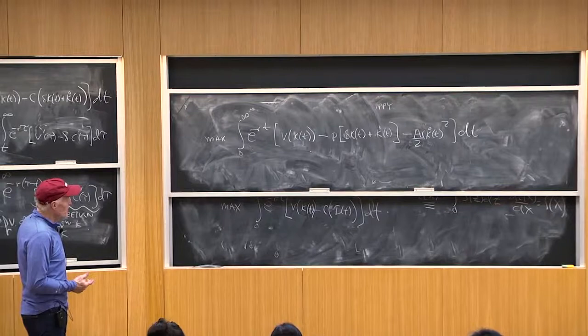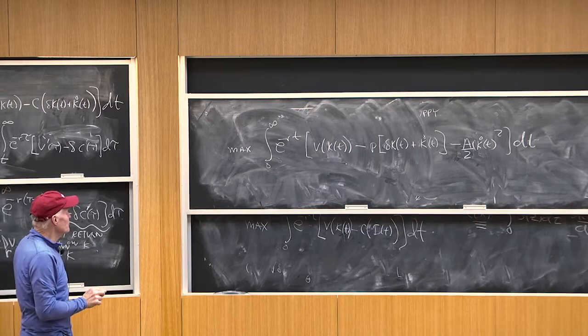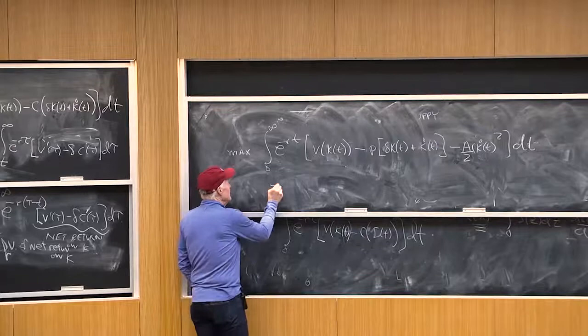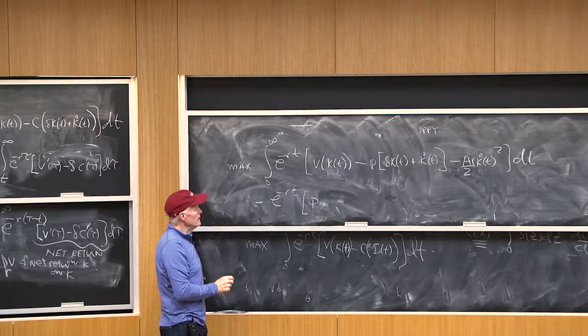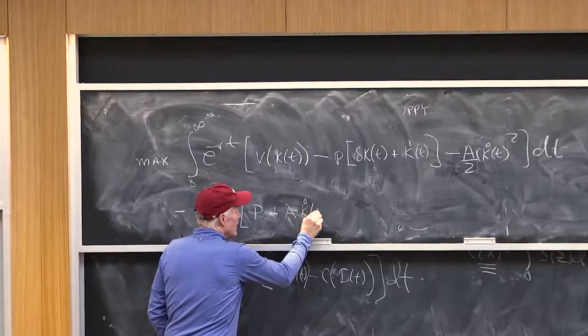We're going to do the perturbation that I have on the board over there. We're going to hold future k dots fixed. So what's my first order condition going to be? I got a differential with respect to k dot at date t, right? So I'm going to get an e to the minus rt minus what multiplies k dot: p plus a k dot.